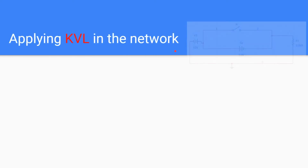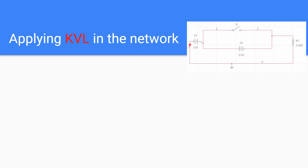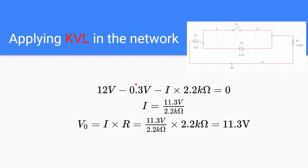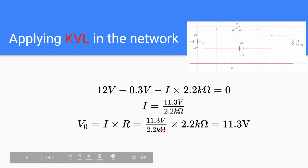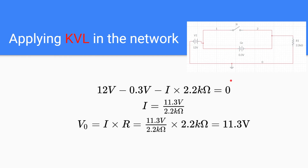Applying KVL in the loop: 12 volt minus 0.3 volt minus the current through the resistor times 2.2 kilohm equals 0. The current is 11.3 volt divided by 2.2 kilohm. The voltage across the resistor V₀ equals I times R, which is 11.3 divided by 2.2 kilohm, times 2.2 kilohm. Cancelling these out gives 11.3 volt, which confirms our answer.